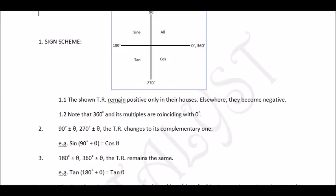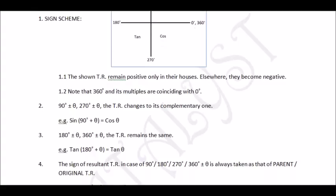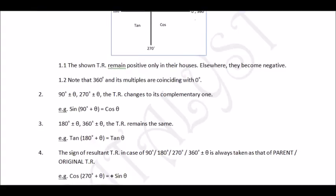To summarize: for 90° and 270°, the trigonometric ratio will change to its complementary; for 180° and 360°, it will remain the same. Now the most important point — Rule 4: the sign of the resulting trigonometric ratio, in the case of 90°, 180°, 270°, or 360° ± θ, is always taken from the parent or original trigonometric ratio.